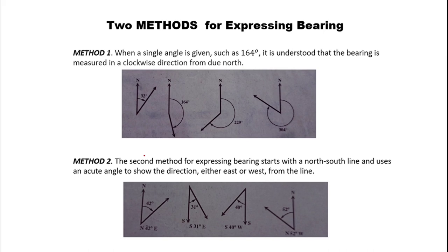We have two methods for expressing bearing. Method one: when a single angle is given, such as 164 degrees, it is understood that the bearing is measured in a clockwise direction from due north. So if the bearing is not expressly stated as north or south, and is given only as 164 degrees, it is understood that direction is from due north.